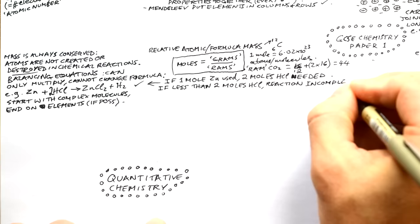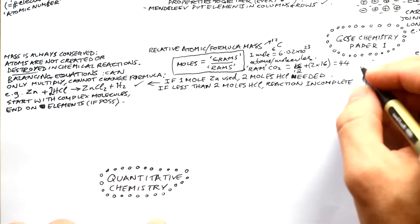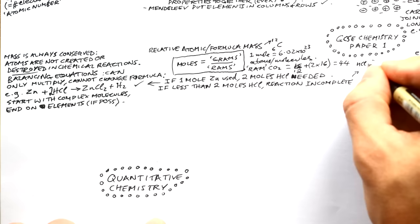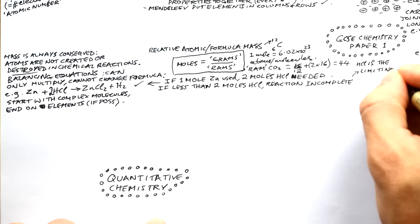Molar ratios matter in reactions. If we use one mole of zinc, we need two moles of hydrochloric acid (because of the 2 in front of HCl). If we have less than two moles of HCl, the reaction would be incomplete — HCl would be the limiting reactant, meaning there's not enough of it for the reaction to complete.